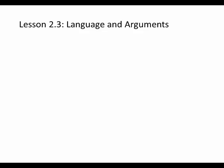Now, there are lots of ways in which language can be unclear. Let me bring up a couple of concrete examples — I want to talk about ambiguity and vagueness. You may hear these terms used interchangeably sometimes, but in the logic classroom, ambiguity and vagueness refer to two different phenomena.